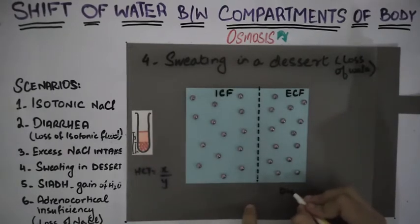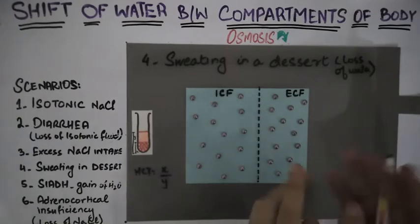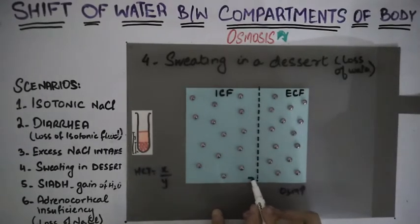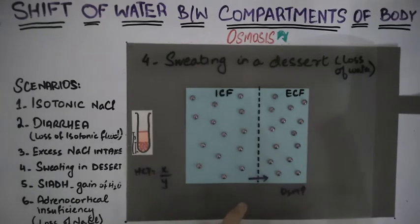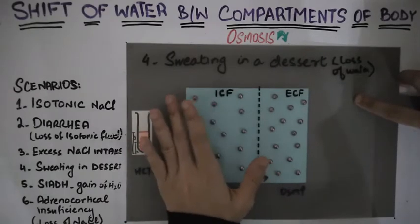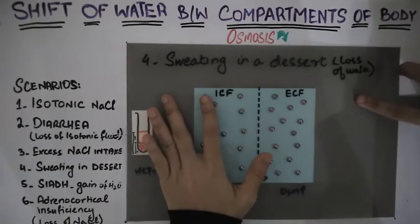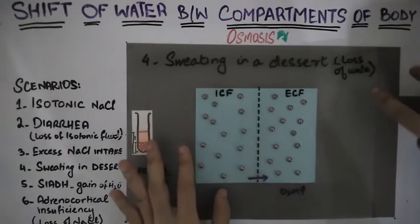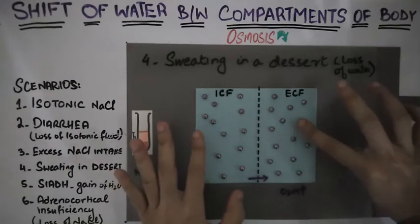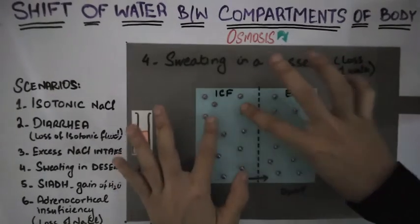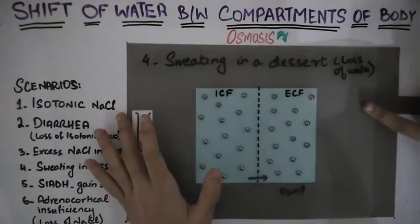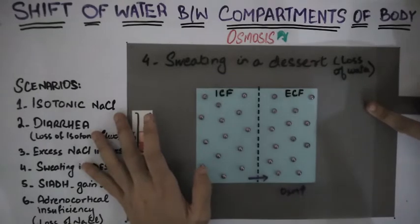Some water has been lost, leading to increased osmolarity in the extracellular fluid. Since ECF is now hyperosmotic compared to the intracellular fluid, water will shift from the intracellular fluid into the extracellular fluid until the osmolarity of the two solutions becomes equal and they become isoosmotic.